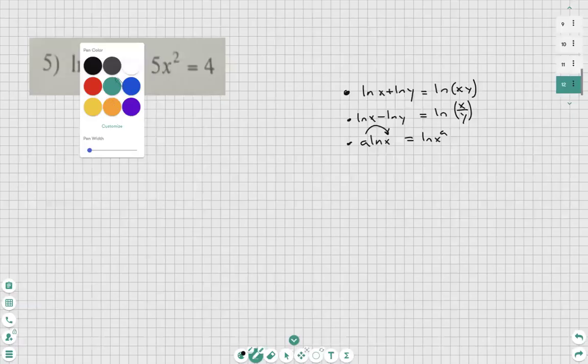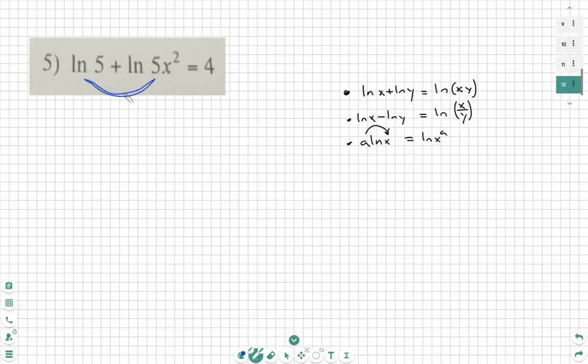So we're going to jump straight into it. I need to combine the left side because I see there are multiple ln's, and that's what we're going to start with.